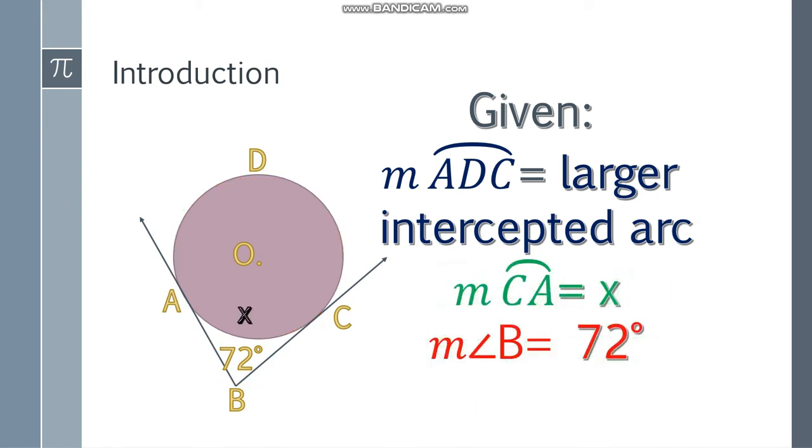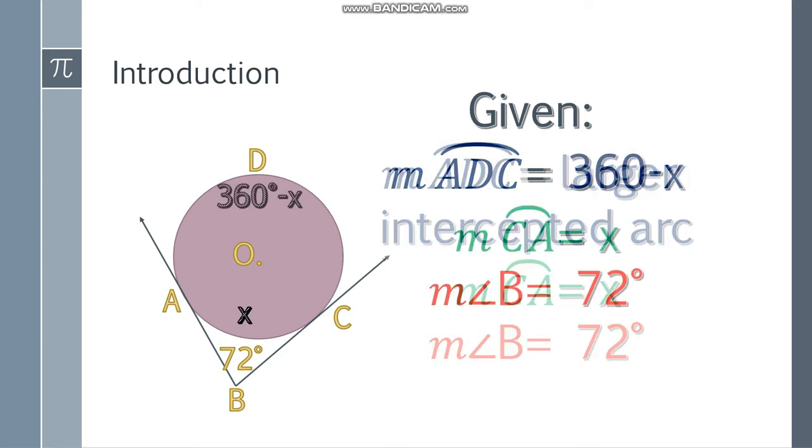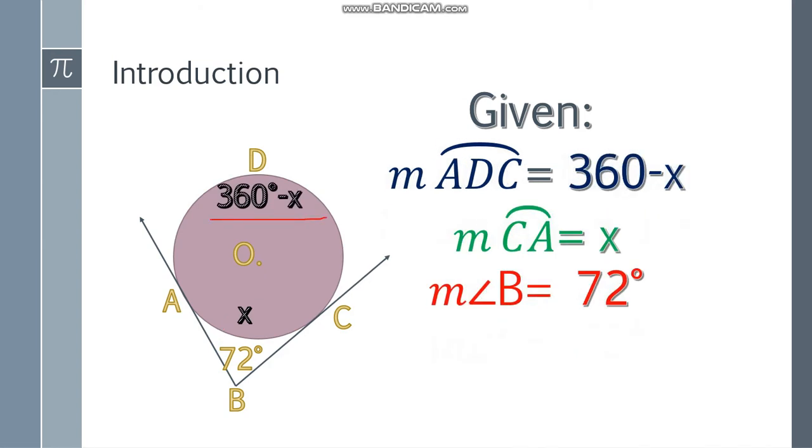So how do we do this? First, let's use variables. Let X be the smaller intercepted arc. So I let X here. And since the circle is 360 degrees, the measure of a circle is 360 degrees, and these are just two parts of the circle, the measure of ADC will be 360 minus X. Because the whole circle, this is X, and this is 360 minus this, we'll get the value of arc ADC.